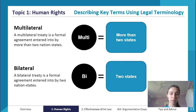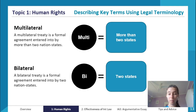We have two different types of treaties: multilateral and bilateral. Both are formal agreements entered into by nation states — a nation state is just the same as a state. The difference is the number of states involved. 'Bi' means two, so a bilateral treaty involves just two states. 'Multi' in this context means more than two, so a multilateral treaty involves more than two states.